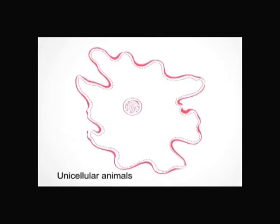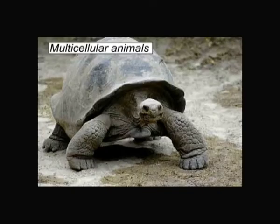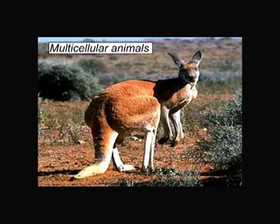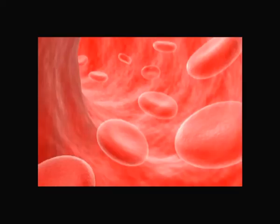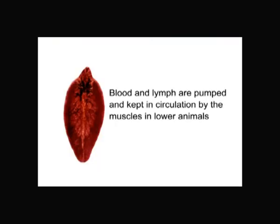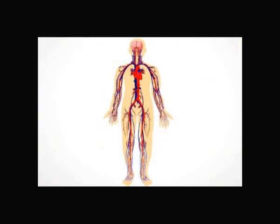After knowing about the importance of the transport system, let us study how the circulatory system has evolved during the evolution of species. In unicellular animals, transport of substances is by simple diffusion. In multicellular animals, a transport system developed using special fluids like blood and lymph. In lower animals these fluids are circulated by muscles, but in higher animals a specialized organ — the heart — has evolved for efficient pumping of blood.